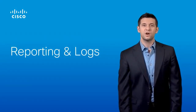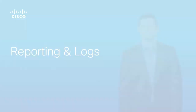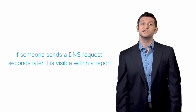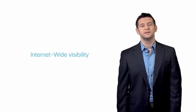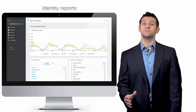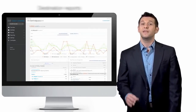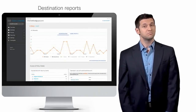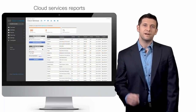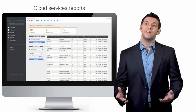Let's now spend a few minutes talking about reporting and logs. Umbrella displays data in real-time in the reporting section of the Umbrella dashboard — if someone sends a DNS request, seconds later it is visible within a report. In addition to the out-of-the-box reports, customers can set filters for custom views, preview these reports, and share with email recipients. They can then schedule these to run every day, week, or month, and can access information on who created and last modified a scheduled report, the last time it was sent, and the next time it will be sent.